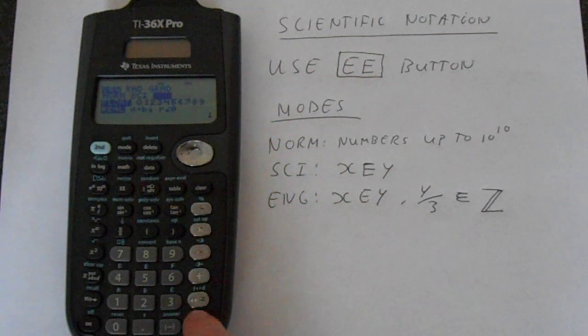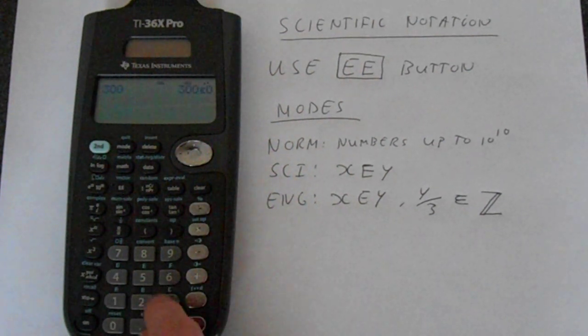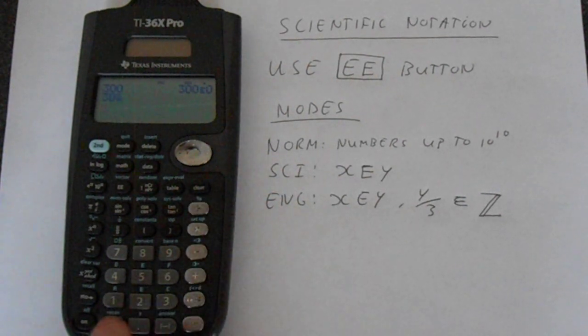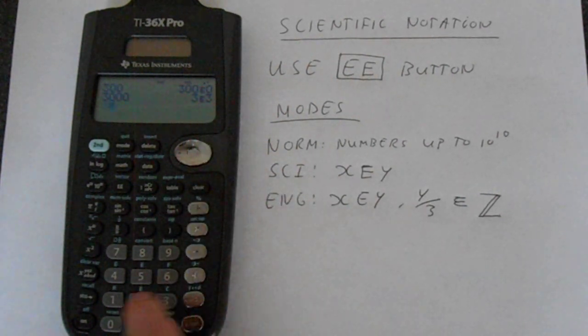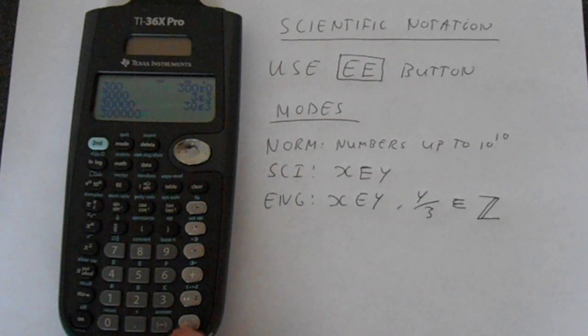So in engineering mode, you get things like 300, 3000 would be like that. Add another 0.